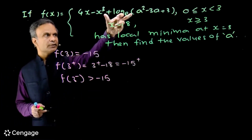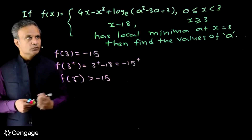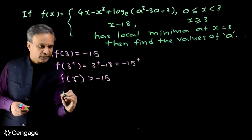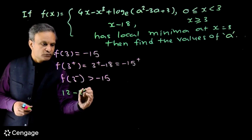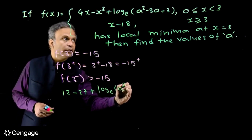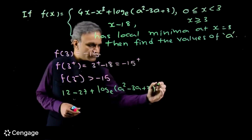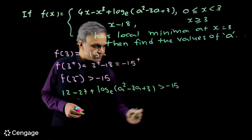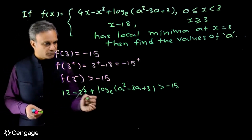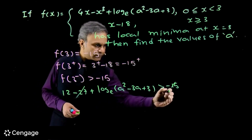For x less than 3 we use the left branch. Putting x=3 into 4x−x³+log(a²−3a+3), we get 12−27+log(a²−3a+3) = −15+log(a²−3a+3). For this to be greater than −15, after cancelling −15 from both sides, we get log(a²−3a+3) > 0.